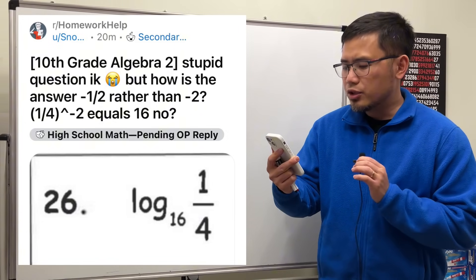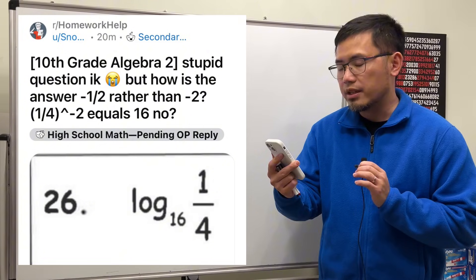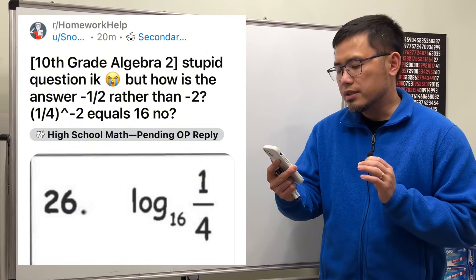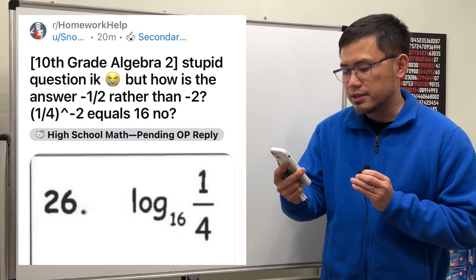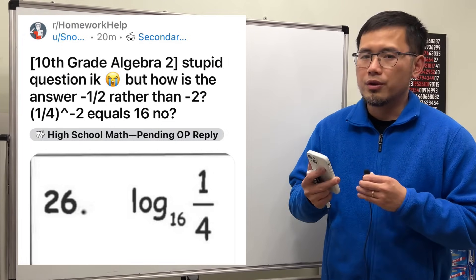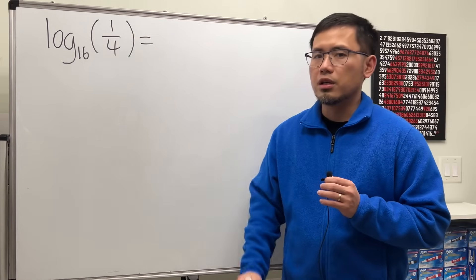10 squared algebra 2 stupid question, I know, but how is the answer negative 1 over 2 rather than negative 2? Parentheses with 1 over 4 inside raised to the negative 2 power equals 16. No. Well first, this is not a stupid question. When we first learn about logarithms, this right here can be confusing.